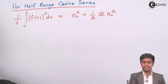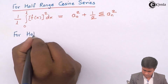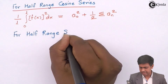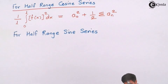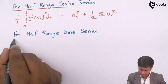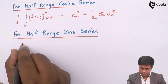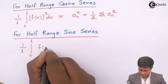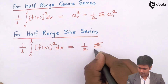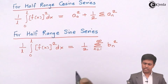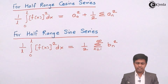For the half range sine series, a₀ and aₙ are both zero, so we only have bₙ. The formula becomes: 1 upon l, integration from 0 to l, of f(x) whole squared dx = 1/2 summation from n=1 to infinity of bₙ squared. This is Parseval's identity for the half range sine series.